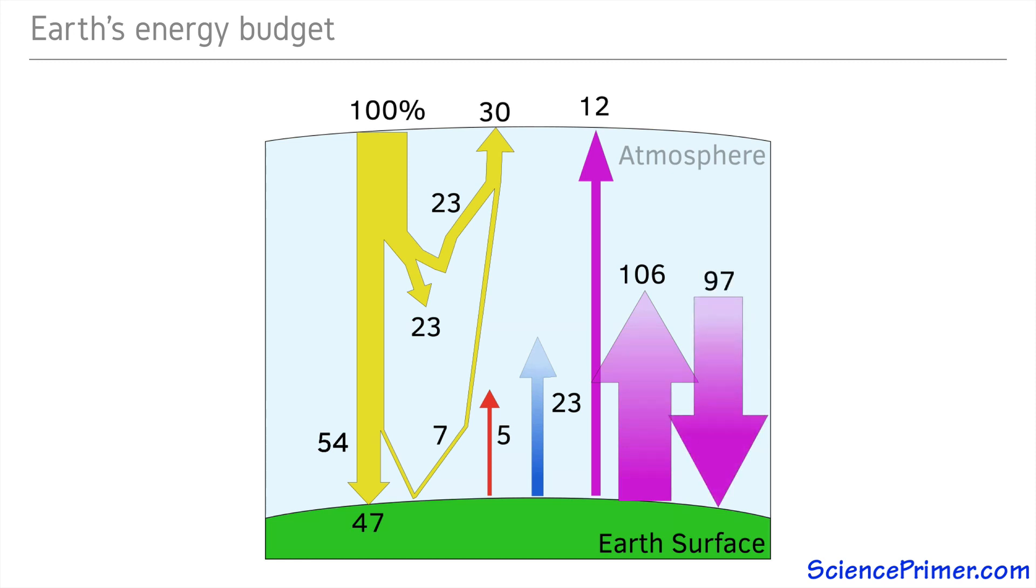This exchange back and forth between the Earth and the atmosphere allows the total fluxes to add up to more than entered the system in the first place.